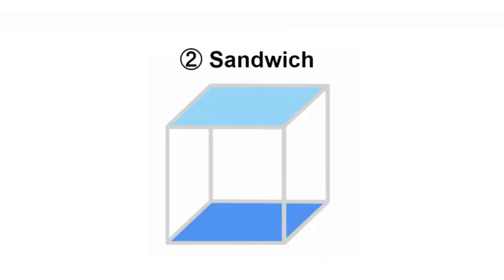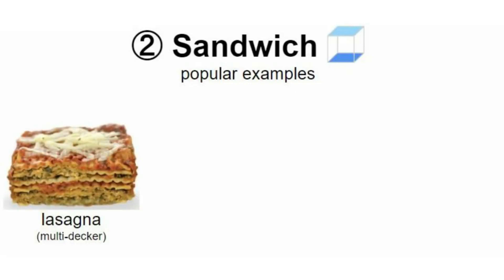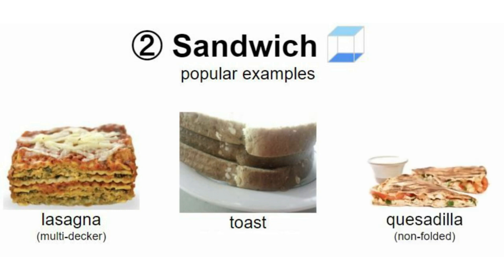Number two is a sandwich, where the starch is on the top and on the bottom. It's clearly a sandwich. By this definition, popular examples include lasagna — that's a multi-decker sandwich — toast, which is just hardened bread with stuff in between, and quesadilla. That has the tortilla on top and on the bottom with stuff in the middle. So yeah, quesadillas count as a sandwich.